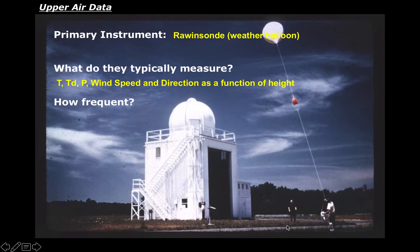As the weather balloon ascends, it measures temperature, dew point temperature — technically it measures relative humidity but we convert it to dew point temperature — as well as pressure, wind speed, and direction. All of that is measured as a function of altitude as it goes up through the atmosphere.